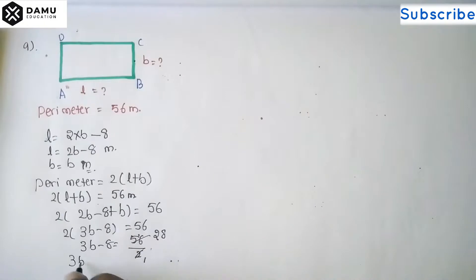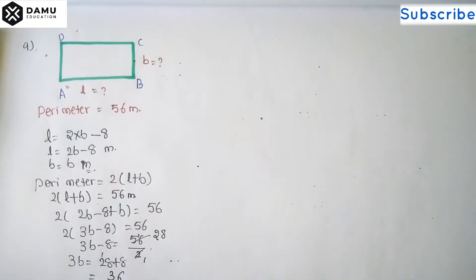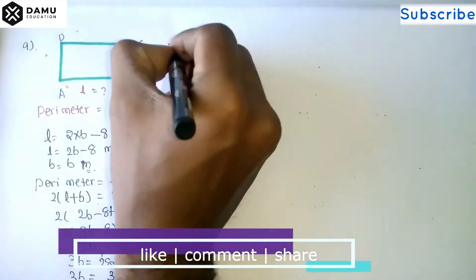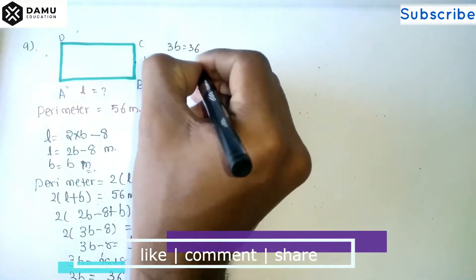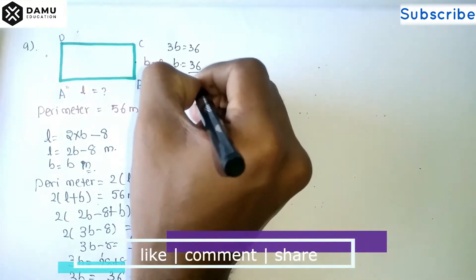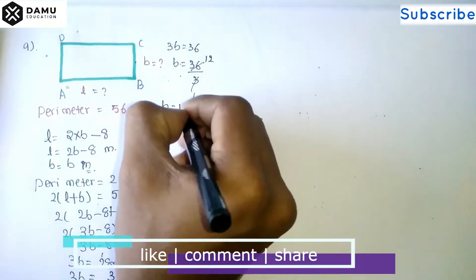So 3b equals 28 plus 8, which is 36. Then 3b = 36, and dividing both sides by 3, b = 12 meters.